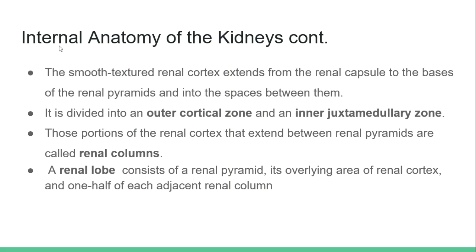A renal lobe consists of a renal pyramid, its overlying area of the renal cortex, and one half of each adjacent renal column.